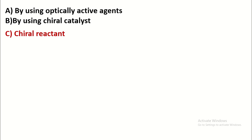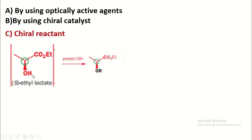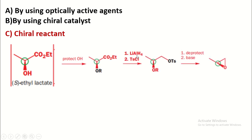Let us discuss the reactions one by one. In this first reaction, the reactant has only one chiral carbon. First, the OH is protected, then lithium aluminum hydride is used for reduction of the ester group to form the primary alcohol. The primary alcohol reacts with TsCl to form OTs. Then a base abstracts the proton from the OH, so O⁻ attacks the OTs carbon to form the beta epoxide.